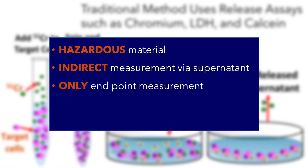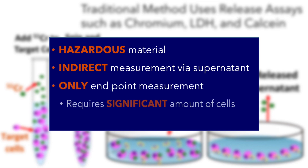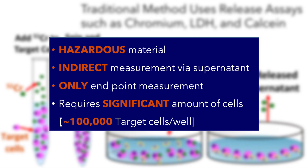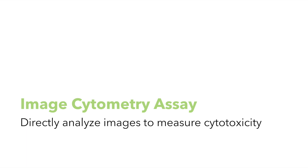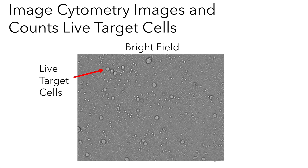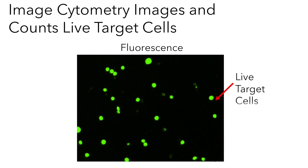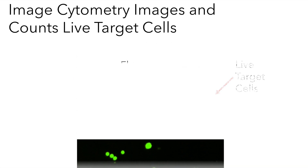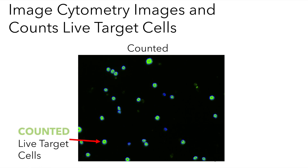It only allows an endpoint measurement and requires a significant amount of cells. In contrast, the image cytometry method images and analyzes captured images directly from the wells. Using an alternative label such as calcein-AM can stain live target cells. Bright field and fluorescent images are acquired, and the calcein-stained live target cells are counted at different time points to measure cell-mediated cytotoxicity.